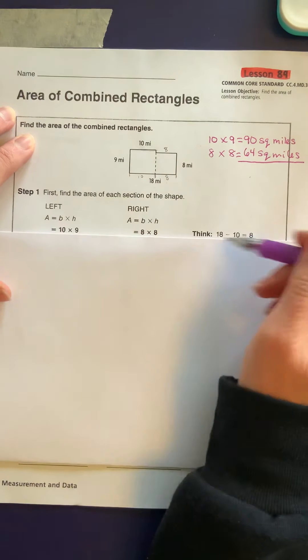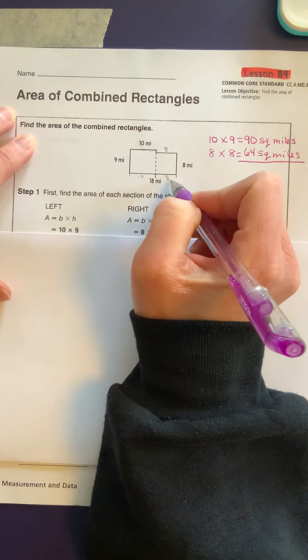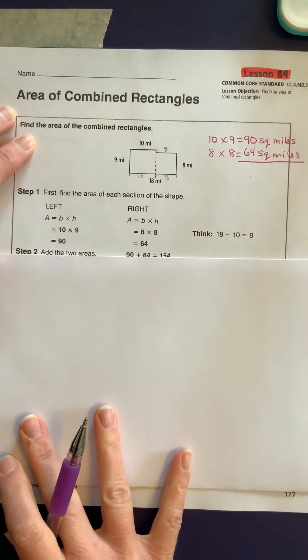So they're saying think 18 minus 10. That's right here. The 18 minus the 10 is going to give us the 8 that's left over there. So 90 and 64.